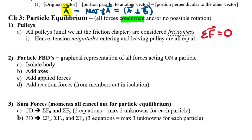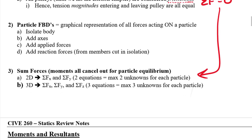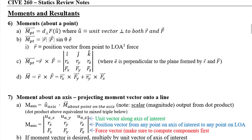Getting into free body diagrams, in chapter three we had four steps: isolate the body, add axes, add applied forces, and add reaction forces. That's what creates a free body diagram. Every single equilibrium problem in statics needs a free body diagram. Even if the problem says 'find the tension in this cable,' it's your responsibility to recognize it's an equilibrium problem and draw a free body diagram, then interpret it into equations.